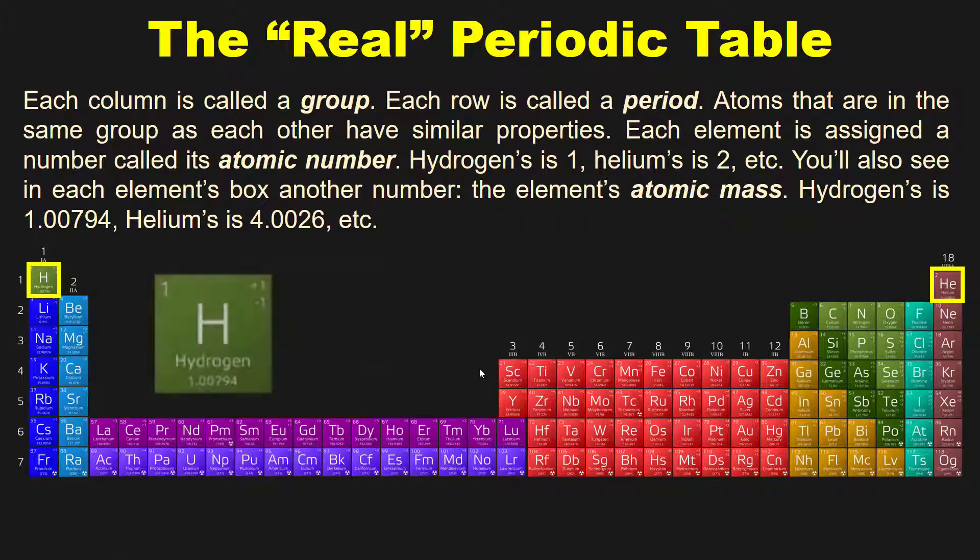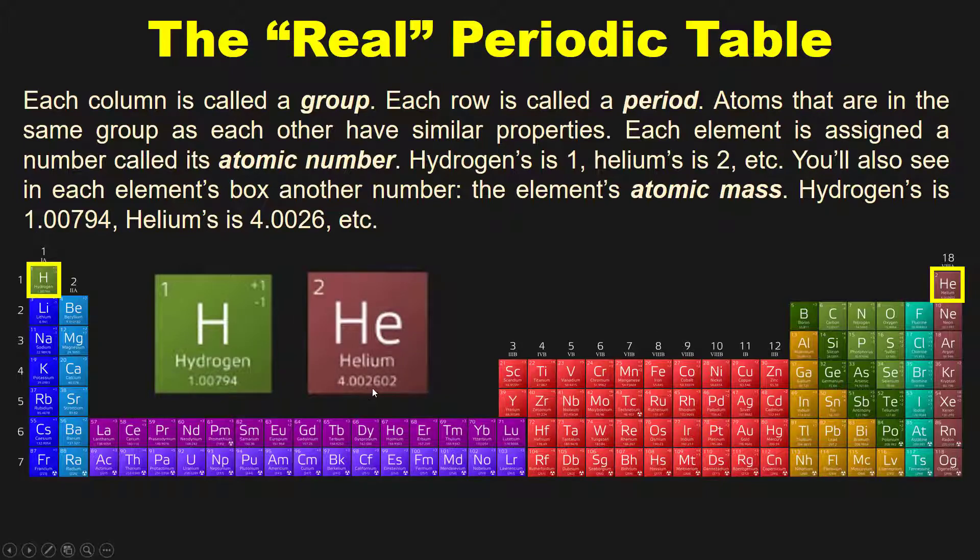You'll also see that in each element's box there is another number. For example, if we zoom in on hydrogen's box shown right here, the number in the upper left is its atomic number, 1. But you see this other number down here for hydrogen: 1.00794. That number is not the atomic number - that is the element's atomic mass. By comparison, helium's is 4.002602, and helium's atomic number is 2. You see the difference between the two.